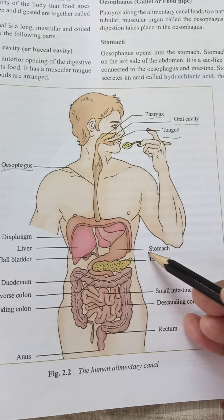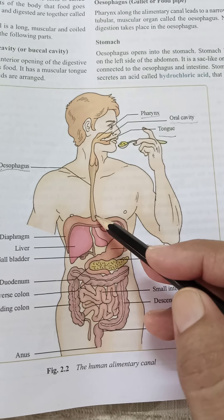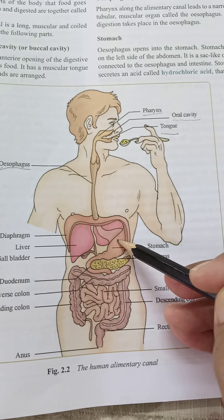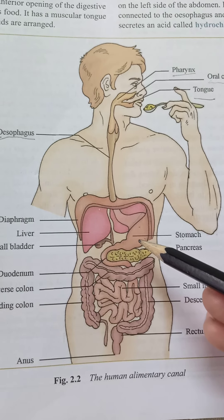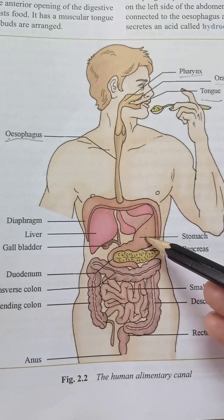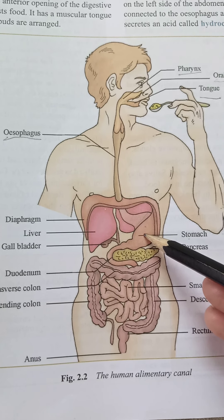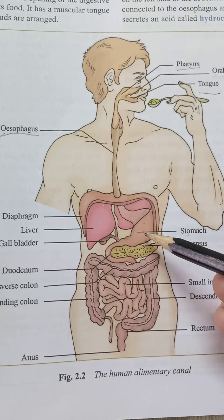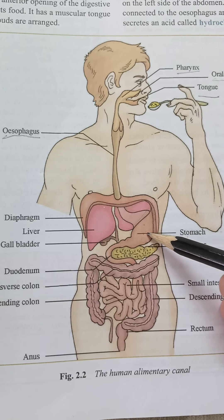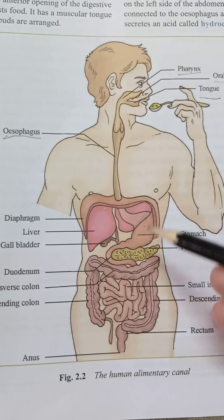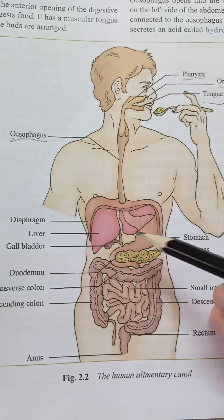یہ stomach ہے۔ چبانے کے بعد جب آپ نے food نگل لی، food pipe کے through یہ stomach میں آ گئی ہے۔ Stomach میں آنے کے بعد اس پر different digestive juices act کرتے ہیں۔ Stomach خود hydrochloric acid کو release کرتا ہے جو چبانے کے بعد نرم غزا کو مزید simple form میں change کرنے میں مدد کرتا ہے۔